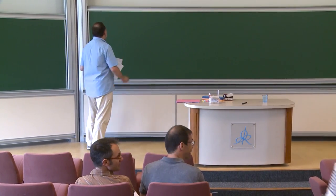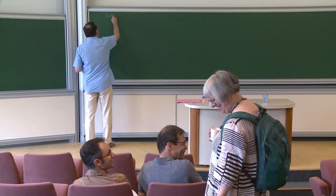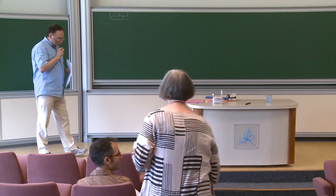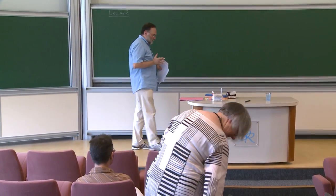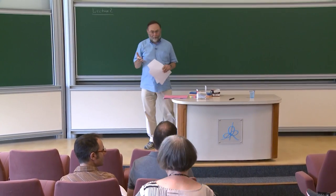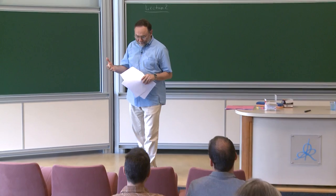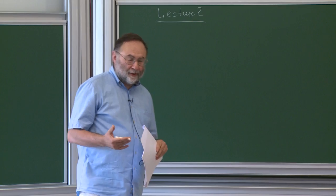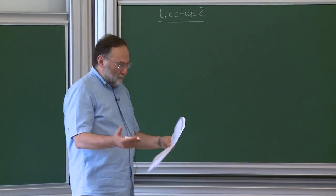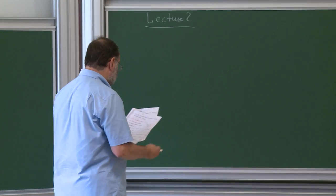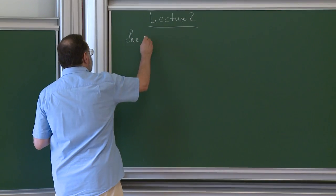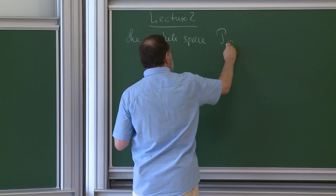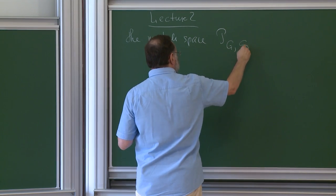This is the second lecture. I want to start with a reminder of what we are going to do. The main goal was to study the character variety, the moduli space of local systems on surfaces. But in order to achieve this, we proceed to a different space which has much more structure, which allows us to treat the moduli space of local systems the way we want. We denote that P, depending on the group G and on the decorated surface S.